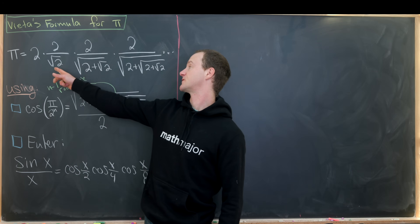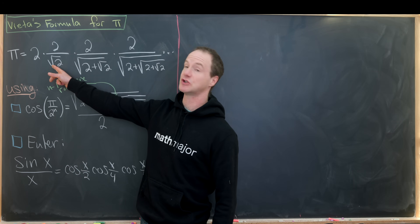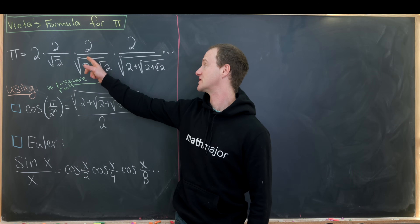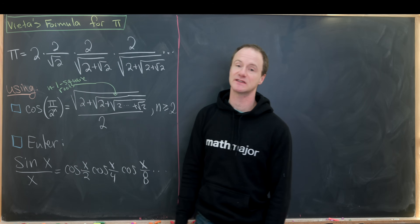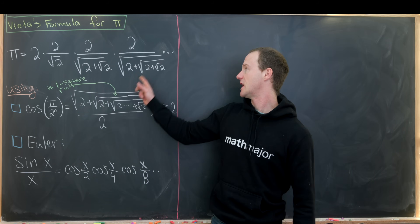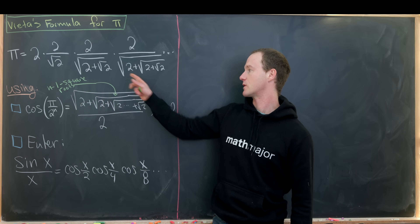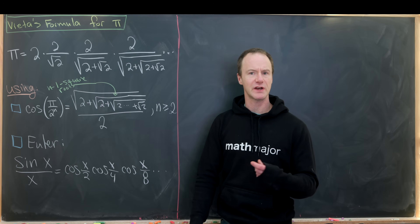In this first term, we have a single 2 under a square root. In the next, we've got two 2s — a square root nested inside of a square root. Then we've got a square root inside of a square root inside of a square root, and so on and so forth.